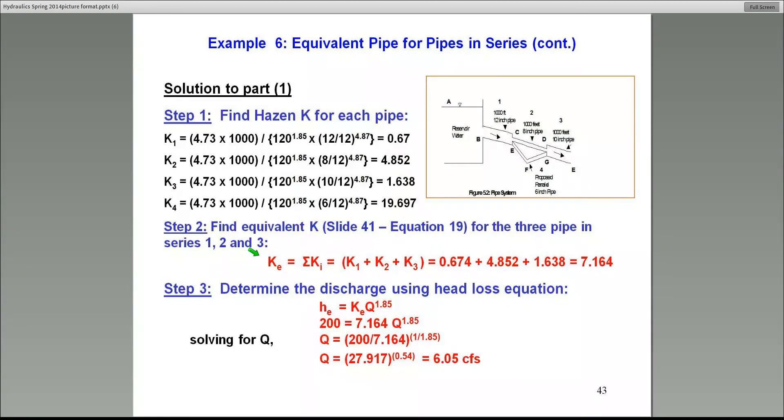Now that KE has several terms in it: it has a length, a C value, and a pipe diameter. So there might be an additional question asking what pipe would you select that has this equivalent KE. In that case, you have to know the C value and the length of the pipe also. Those have to be pre-specified because there are three unknowns in that equation.